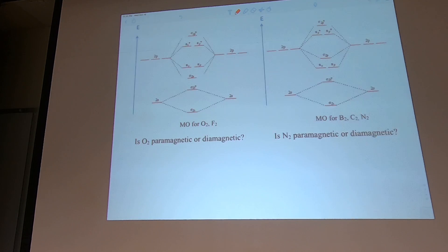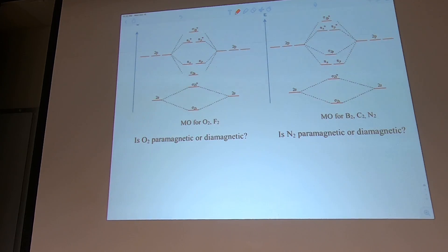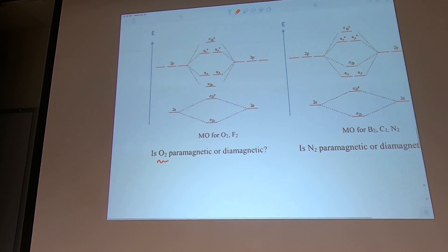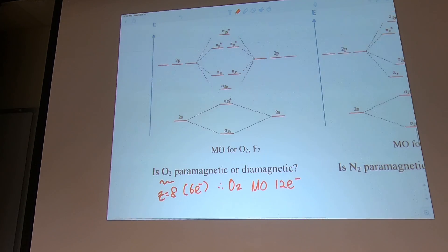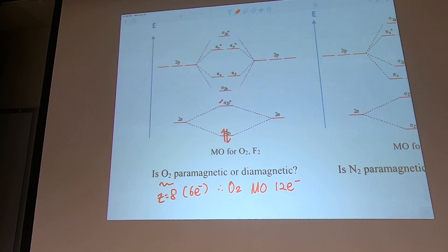Let's look at oxygen. Oxygen is a heavier one, so I'm going to use this diagram. Oxygen has Z=8, but what matters is 6 electrons. For O2 molecular orbital, you're dealing with 12 electrons. So 12 electrons: 1, 2, 3, 4, 5, 6, 7, 8, 9, 10, 11, 12.